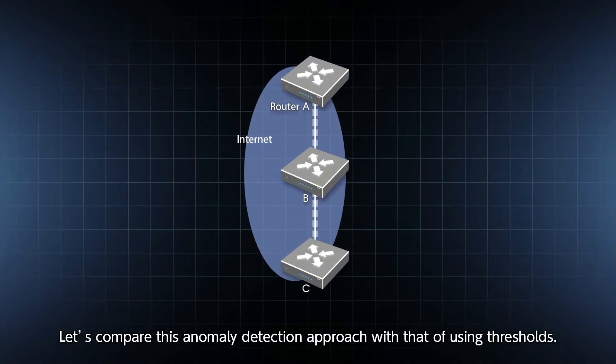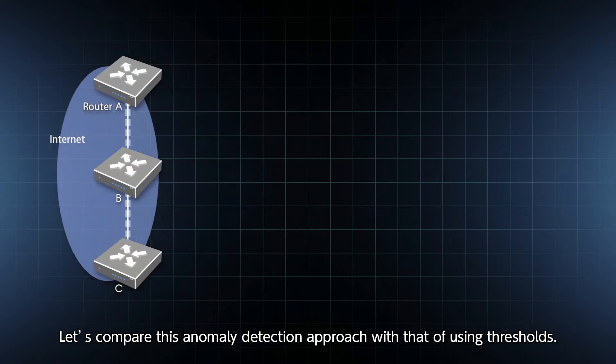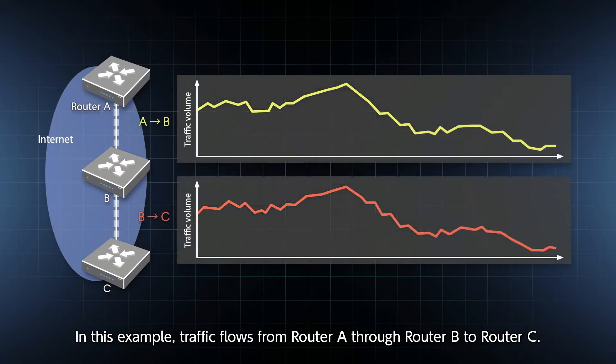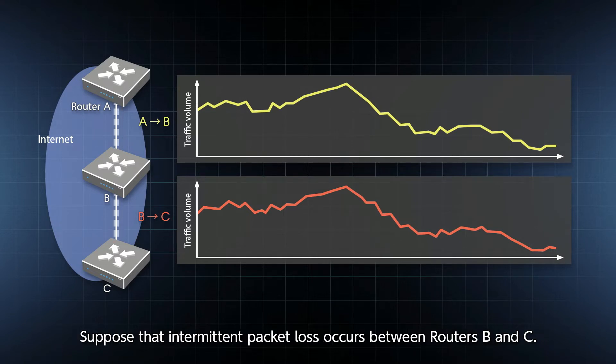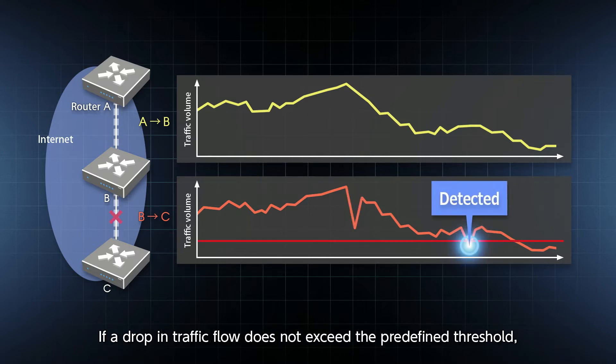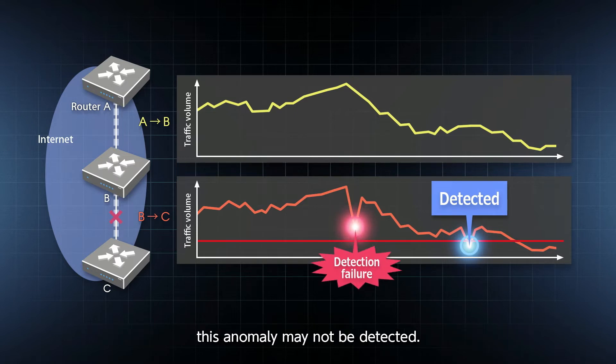Let's compare this anomaly detection approach with that of using thresholds. In this example, traffic flows from router A through router B to router C. Suppose that intermittent packet loss occurs between routers B and C. If a drop in traffic flow does not exceed the predefined threshold, this anomaly may not be detected.